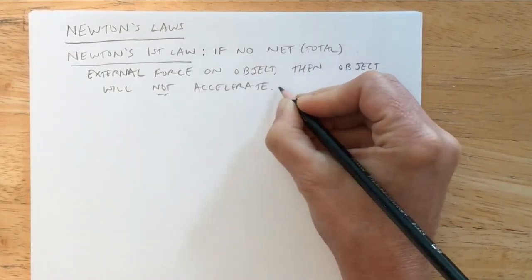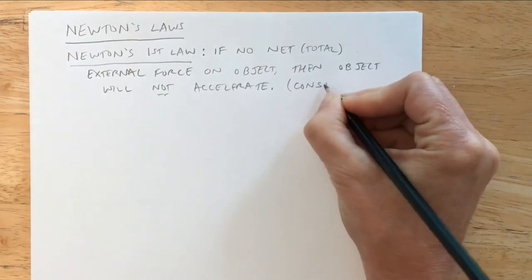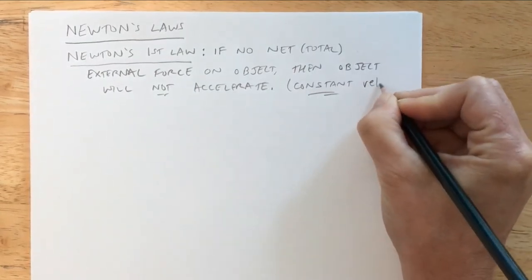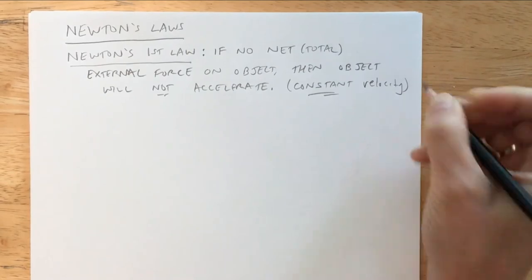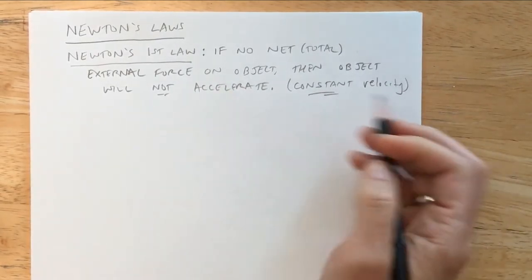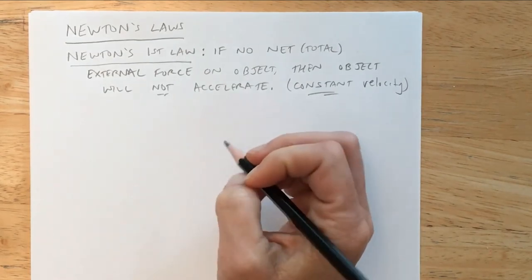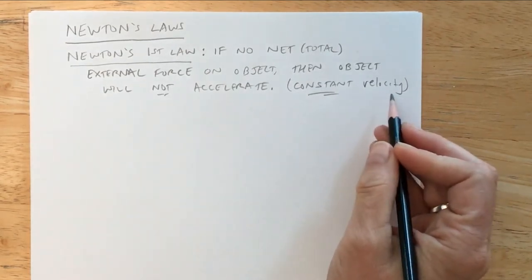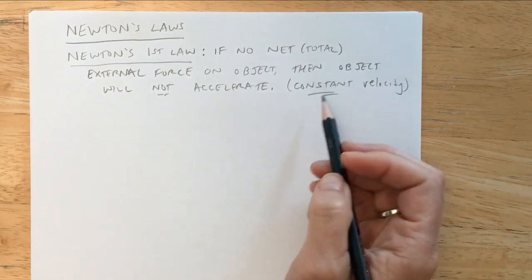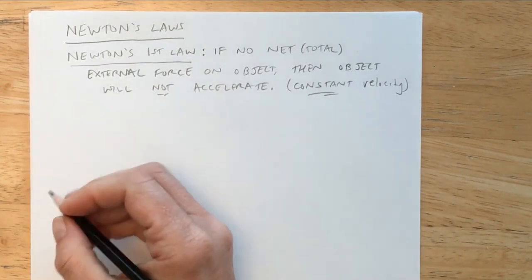And if an object is not accelerating, then we know that means it has a constant velocity, where velocity is a vector. So even if something's moving in circular motion, it is accelerating even if its speed is constant. Velocity is speed and direction, and that will stay constant unless there's a net external force acting.